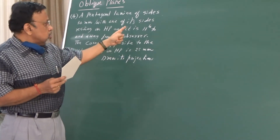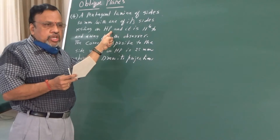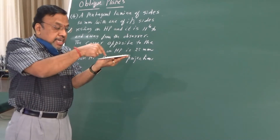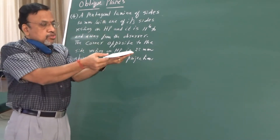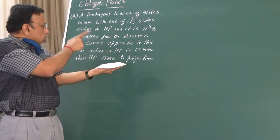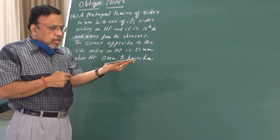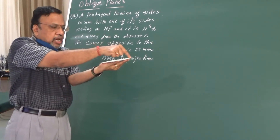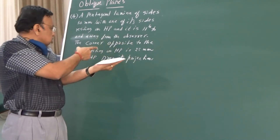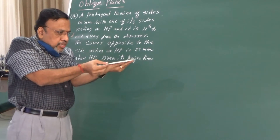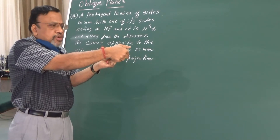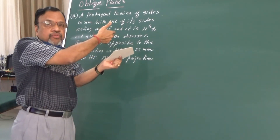Let us say you can have this pentagonal lamina. We know that one of the sides is resting on HP. Since we know that one of the sides is resting on HP, that particular side in the initial view should be kept perpendicular to VP. Since I need to keep it perpendicular to VP, the details of VP are seen in the top view. So it is just a clue that I need to start from the top view. Since one of the sides is resting on HP, initially I will consider the entire lamina to be resting on HP itself. The side which is resting on HP has to be perpendicular to VP.